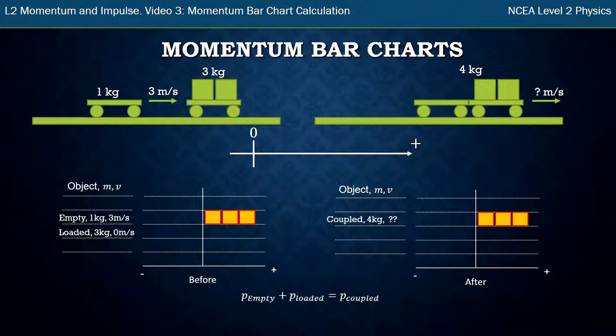We came up with this equation that the momentum of the empty one plus the momentum of the loaded one has to equal the momentum of them coupled together. But if you look at that diagram on the left you see the loaded one has no momentum units, has no momentum, so I can simplify this equation just to the momentum of the empty one equals momentum of the coupled.